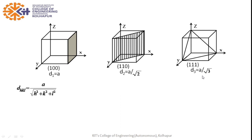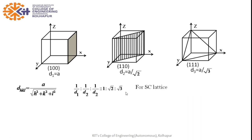If we find the ratio 1/d1 : 1/d2 : 1/d3, the 'a' cancels and we get 1 : √2 : √3 for simple cubic. For BCC (body-centered cubic) lattice the ratio is 1 : 1/√2 : √3.